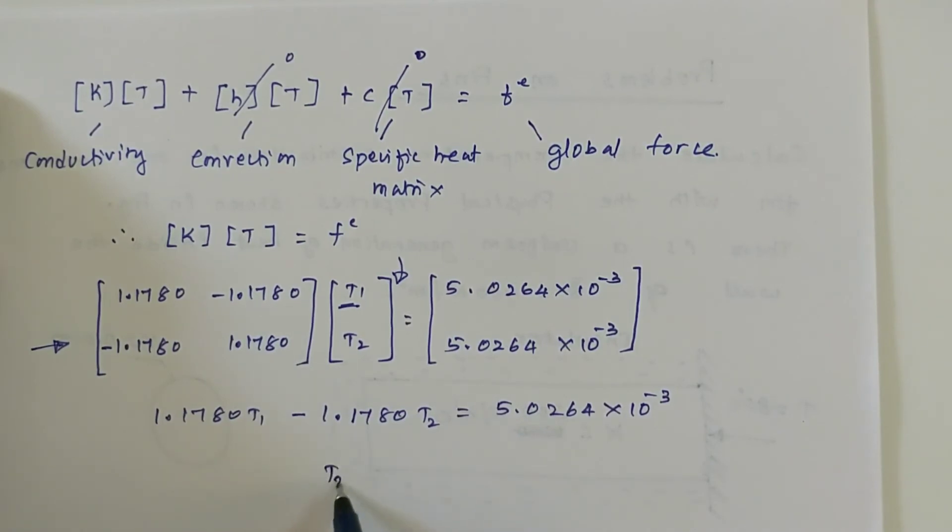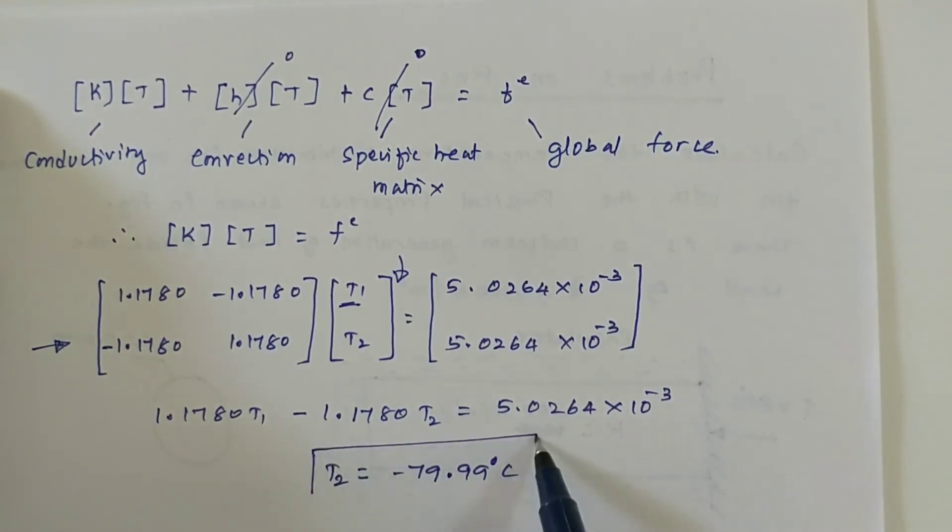If you solve this, since we know the value of T1, T2 happens to be minus 79.99 degrees centigrade. This is the value of T2.